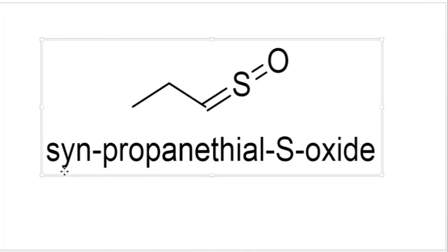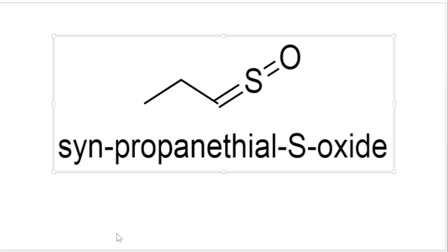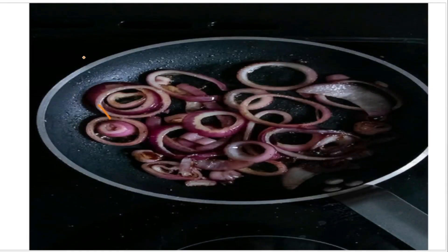There is a compound called syn-propanethial S-oxide. This compound is responsible for our tearing. How is this compound produced and where does it come from? When we chop onions, the skin of the onion is damaged.